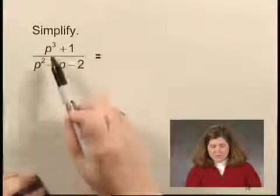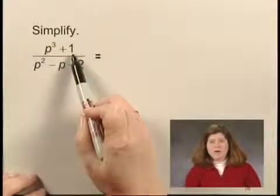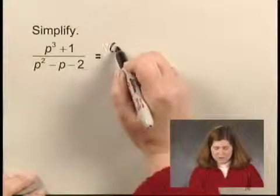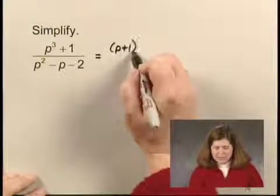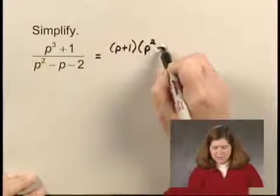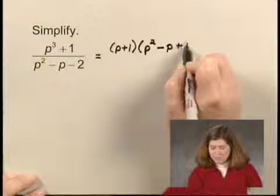The numerator is p cubed plus 1. This is a sum of cubes. It factors into p plus 1 times p squared minus p plus 1.